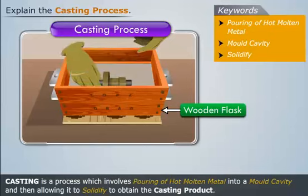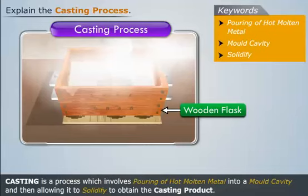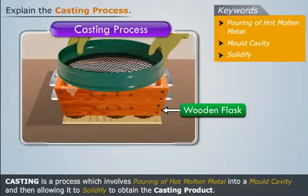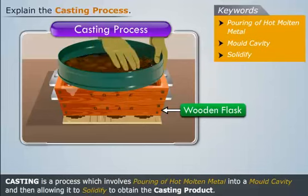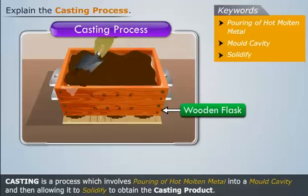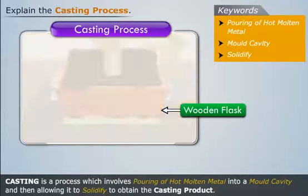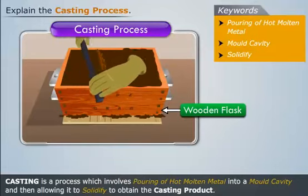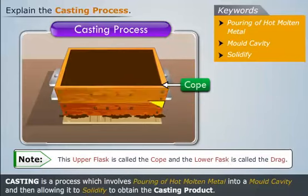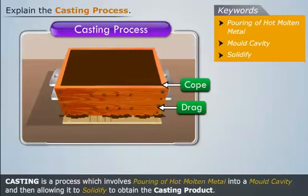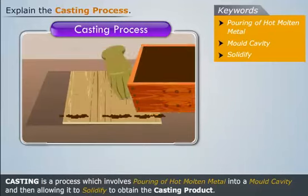Then place another similar pattern over the first pattern and repeat the same procedure: sprinkle the parting sand, place a hand riddle and put some sand and filter it, then remove the riddle and put some backing sand, then ram the sand with the hand rammer and level the sand equally. Note that now this upper flask is called the cope and the lower flask is called the drag.